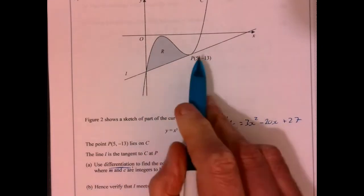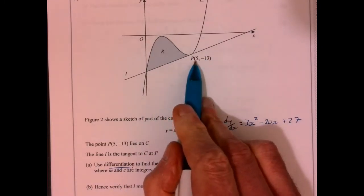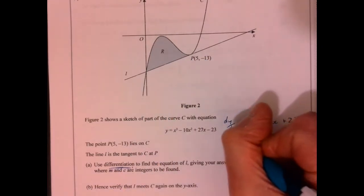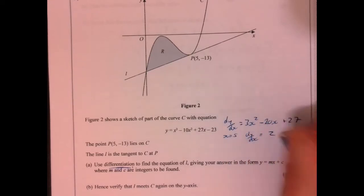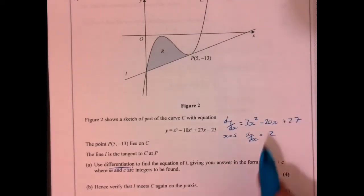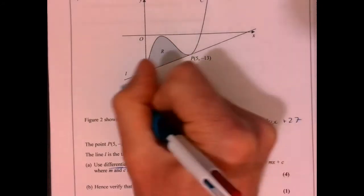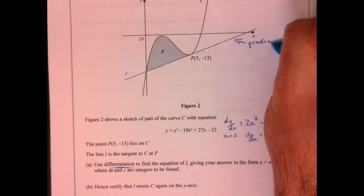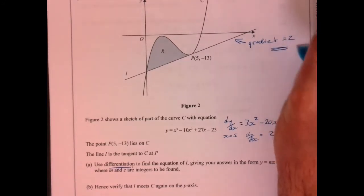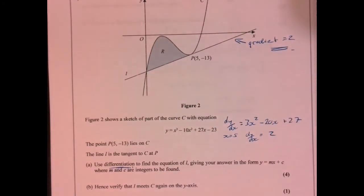Why are we using differentiation? When x is 5, so sub in x is 5, then dy/dx will equal 2. So therefore, the gradient of the line that we're looking for must equal 2.